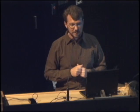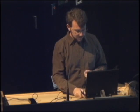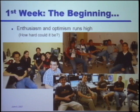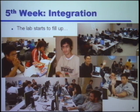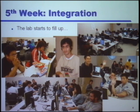I'm going to give you a brief glimpse of the process of going through the quarter. At week one, it's the beginning — enthusiasm and optimism run really high. After all, we have ten weeks. How hard could it be? They've played games before. They know how this stuff should work. It's just a matter of sitting down and coding things up, right? Well, around the fourth or fifth week, we get to the stage of integration where everybody who's been working on things independently has to suddenly glue these things together into a networked, distributed game. That's when the lab really starts to fill up, because that's where all the hard problems start to surface.